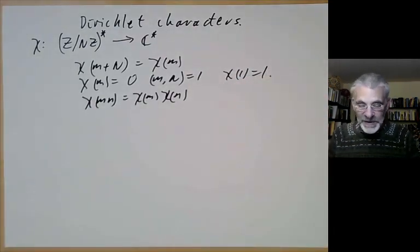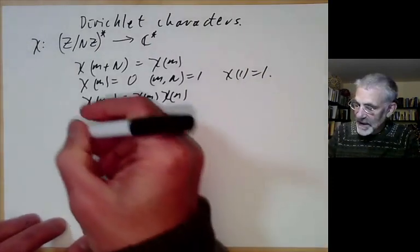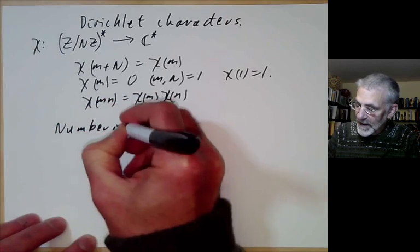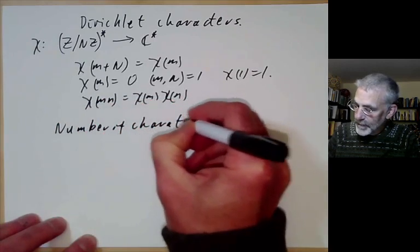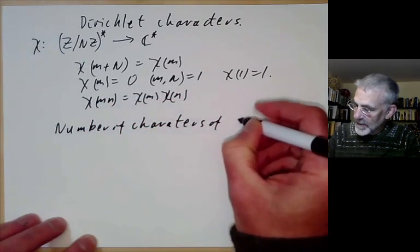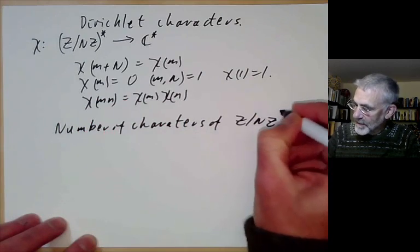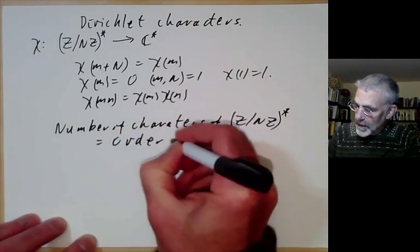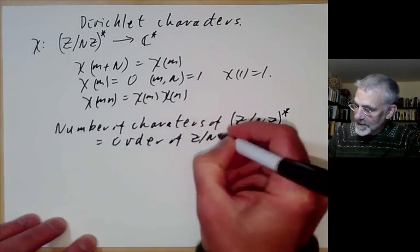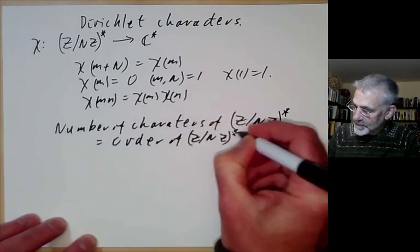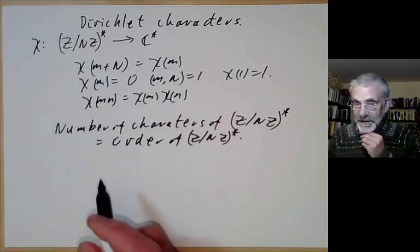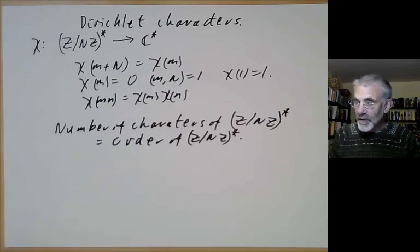Last lecture we saw several examples, and in particular we saw that the number of characters of Z modulo nZ star is equal to the order of Z over nZ star. Now we're going to discuss some properties of characters in more detail.